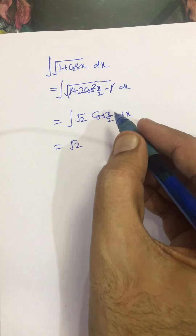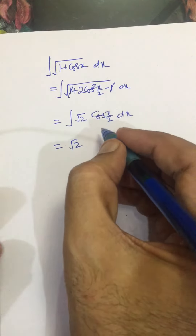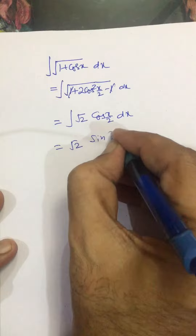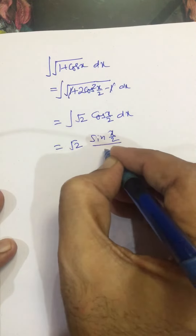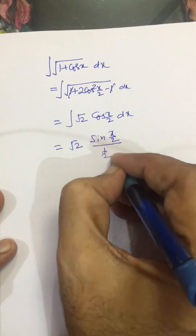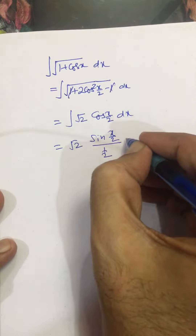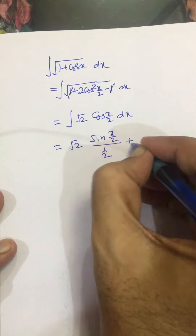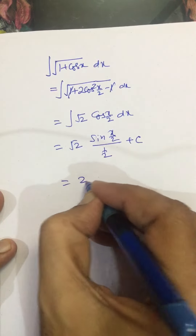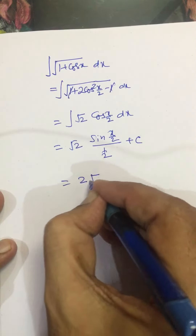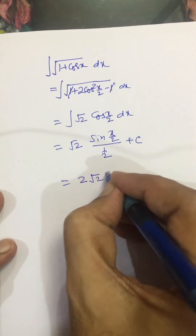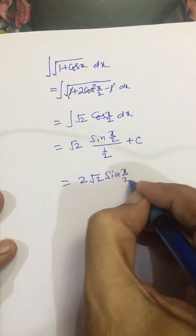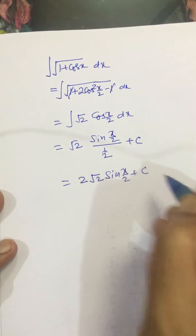Now, we will integrate cos(x/2) as sin(x/2) divided by 1/2, plus C, which gives us 2 sin(x/2) plus C.